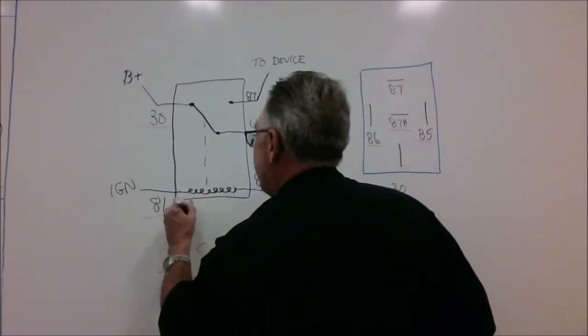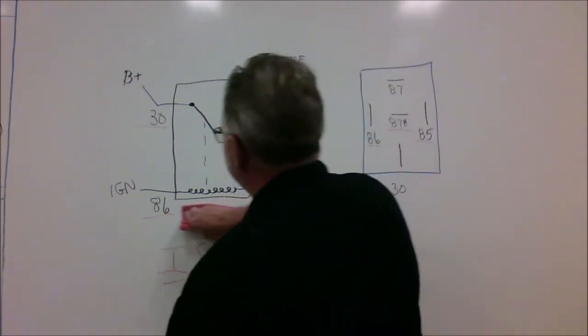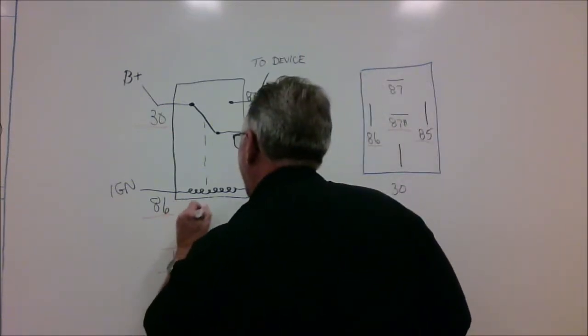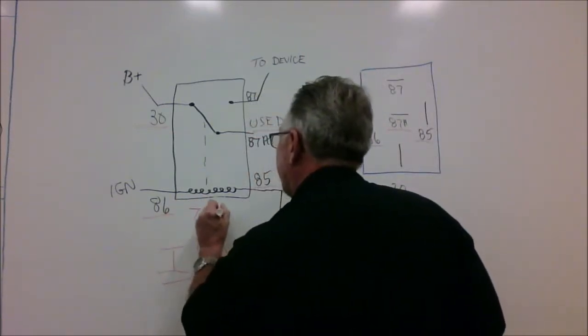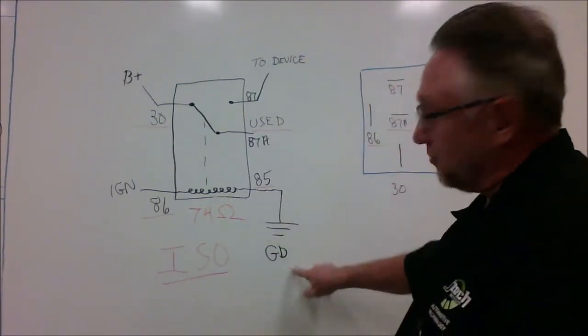Okay, so what happens is this coil is roughly 70, let me say 74 ohms. It might be a little more than that, but this is basically a 74 ohm relay. All right, and what will happen is you can see 85 goes directly to ground.